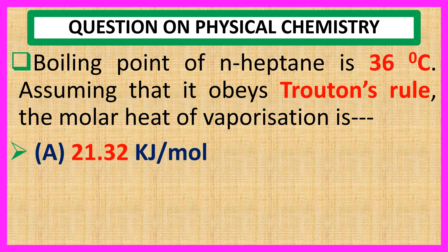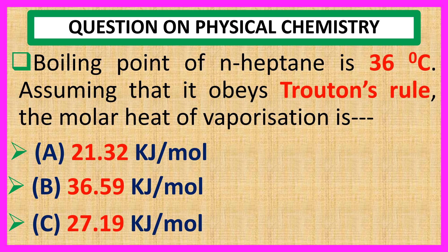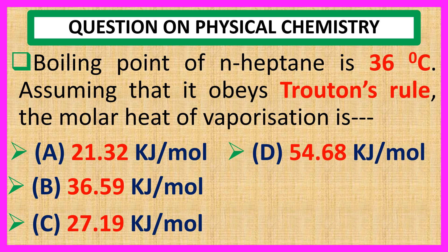Choices are: A. 21.32 kilojoule per mole. B. 36.59 kilojoule per mole. C. 27.19 kilojoule per mole. And D. 54.68 kilojoule per mole.